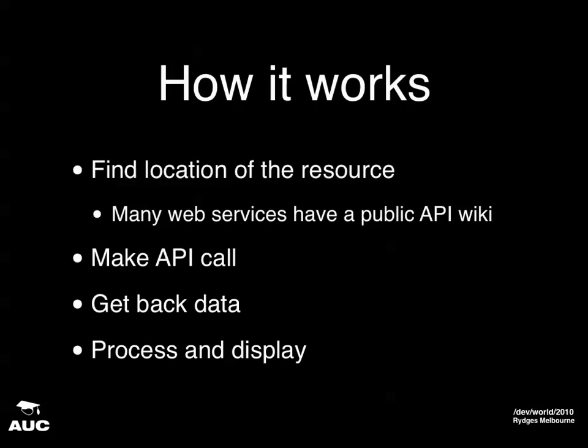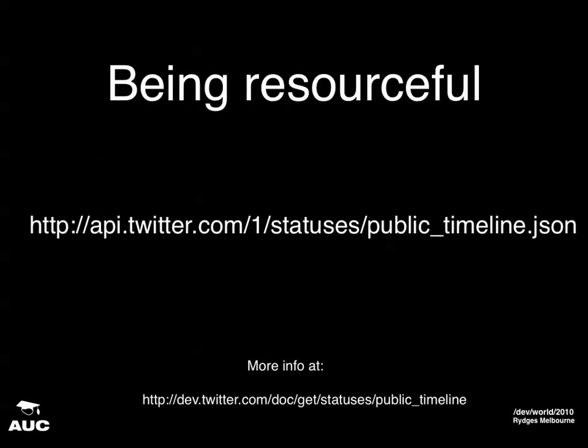So how it works: you find the location of the resource you want to get. Many web services have a public API or documentation you can use to find out what resource you want to download into your app. You would then make the API call in your app, get your data back, and then process and display it appropriately. This here is an example of a resource — the Twitter public timeline — which responds and gives you back the 20 latest tweets.